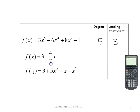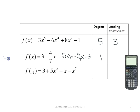The second example is not in descending order. If we were to write it in descending order, it would be f(x) equals negative 4/7 x plus 3. So the degree here is 1, because this x is to the first power. This is a polynomial function, but it's a special polynomial function — it can also be called a linear function. The leading coefficient is negative 4/7.